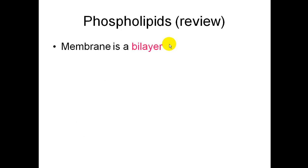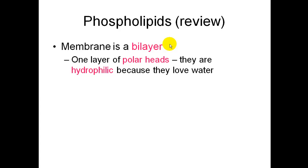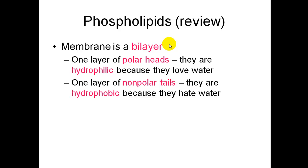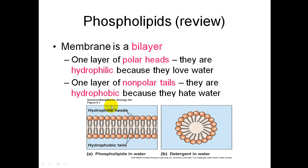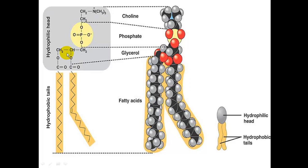Phospholipids, as a review — the membrane is a bilayer, which means it has two parts. One layer is polar heads; they are hydrophilic because they love water. The other layer is nonpolar tails, and they are hydrophobic because they hate water. Your hydrophobic tails are in the middle, and there are two tails per head. The hydrophilic head includes your choline group, your phosphate group, and your glycerol. Then your fatty acids — one is saturated and one is unsaturated — make up your hydrophobic tails.